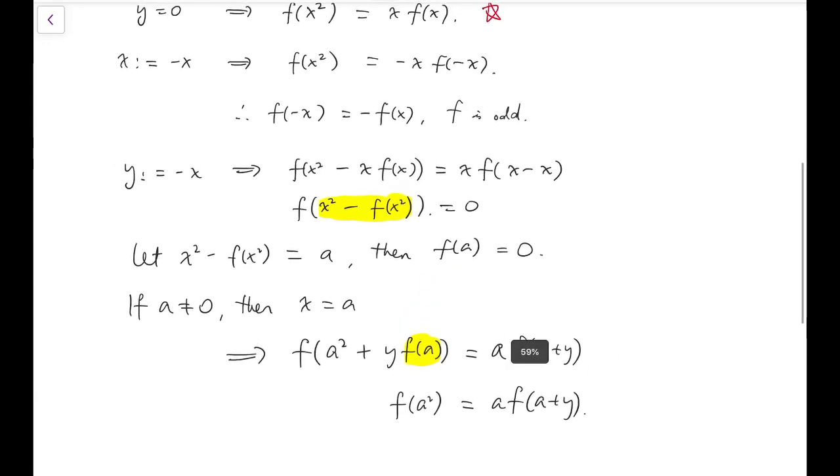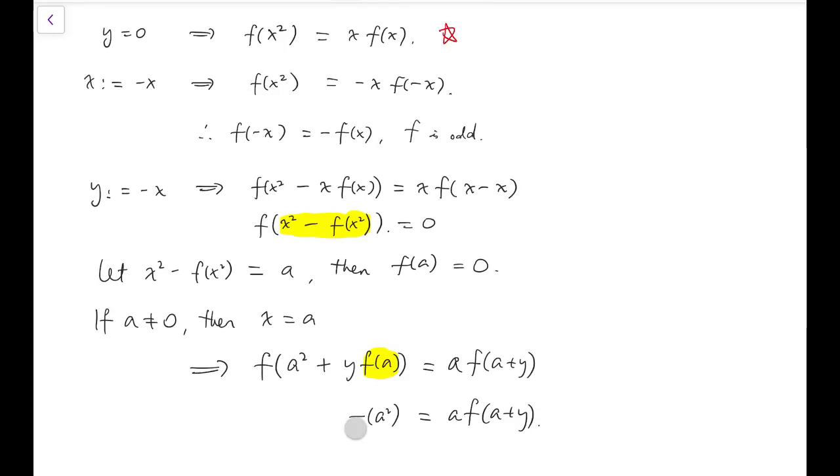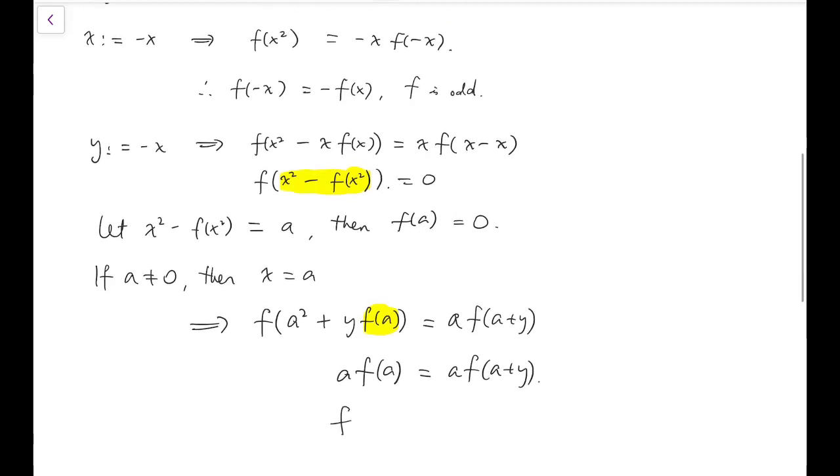And we know that f of a squared actually equals to a f of a from the red star equation. So we know that left hand side is actually zero as well. Now we have f of a plus y to be zero.